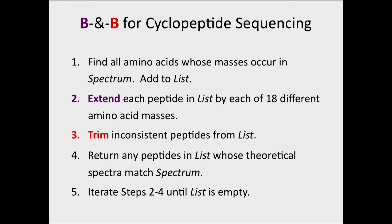And we'll do steps 2 through 4 over and over again, this branching and bounding, and then testing, until we run out of peptides to consider, until we have all inconsistent peptides.